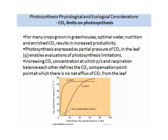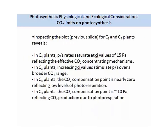Examining the figure on screen in more detail reveals the following. In C4 plants, photosynthetic rates saturate at internal CO2 values of 15, reflecting the effective CO2 concentration due to photorespiration mechanisms. In C3 plants, increasing CI levels stimulate photosynthesis over a broader carbon dioxide range. In C4 plants, the CO2 compensation point is nearly zero, reflecting low levels of photorespiration. While in C3 plants, the CO2 compensation point is about 10, reflecting carbon dioxide production due to photorespiration.